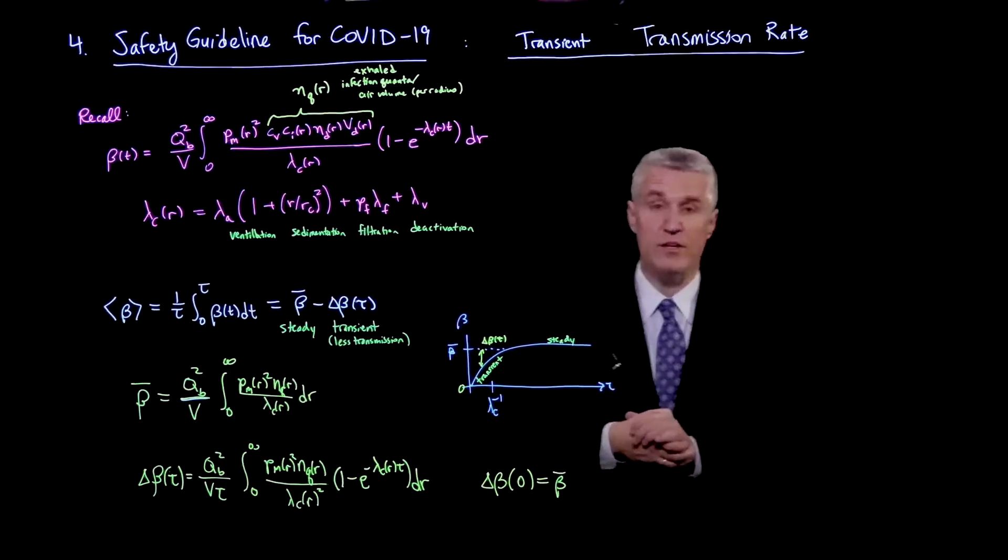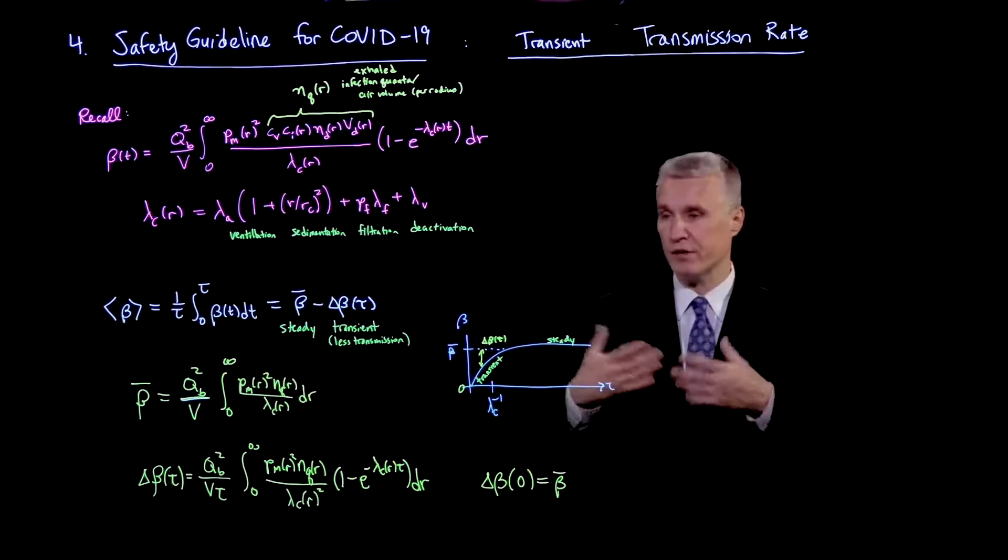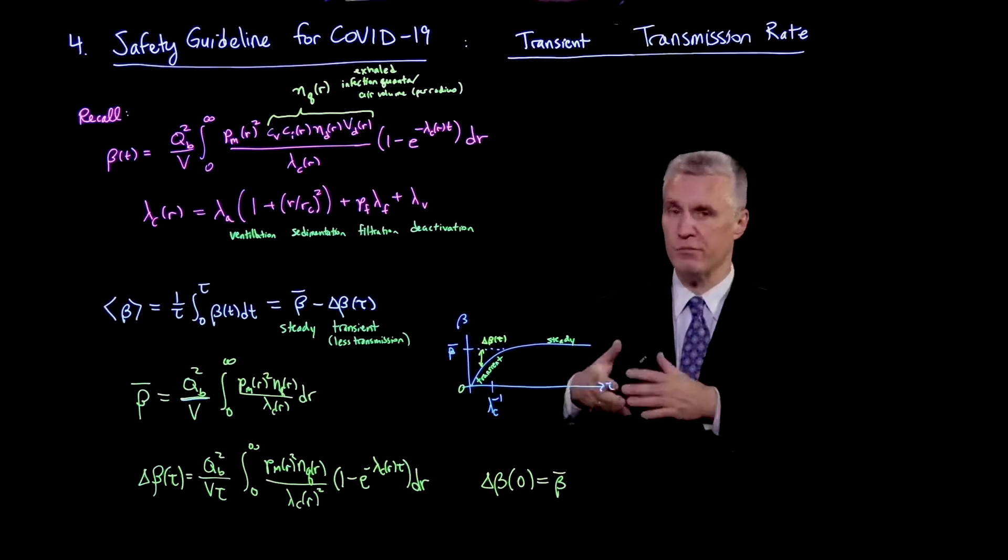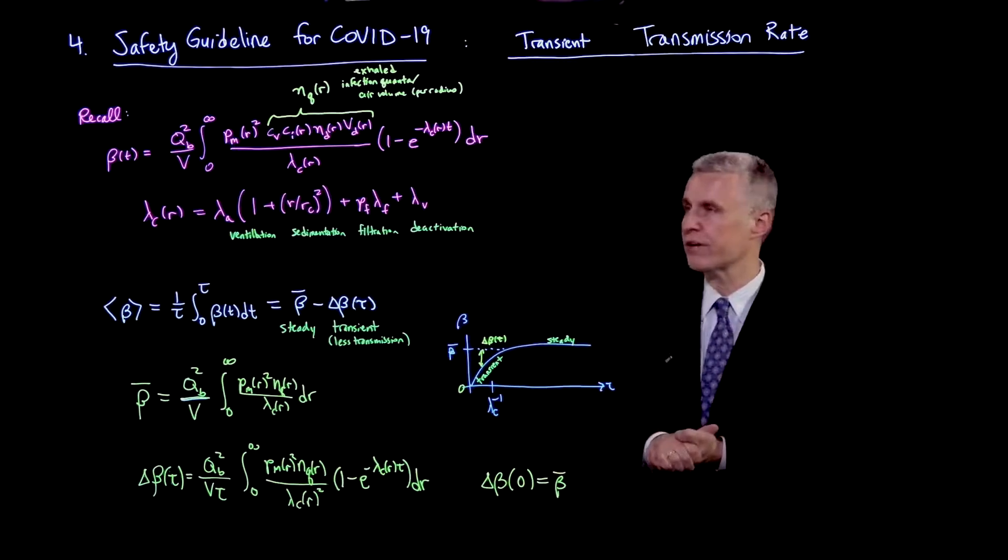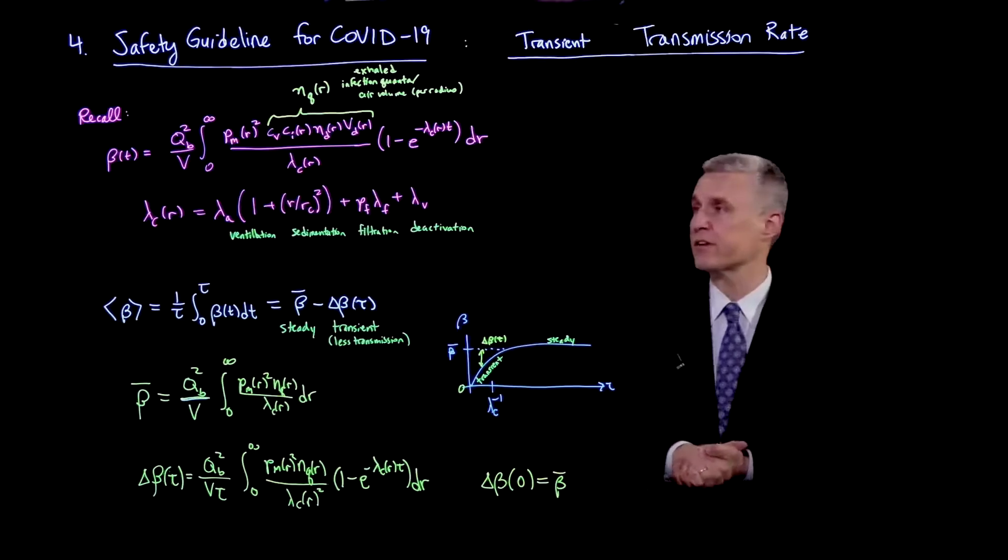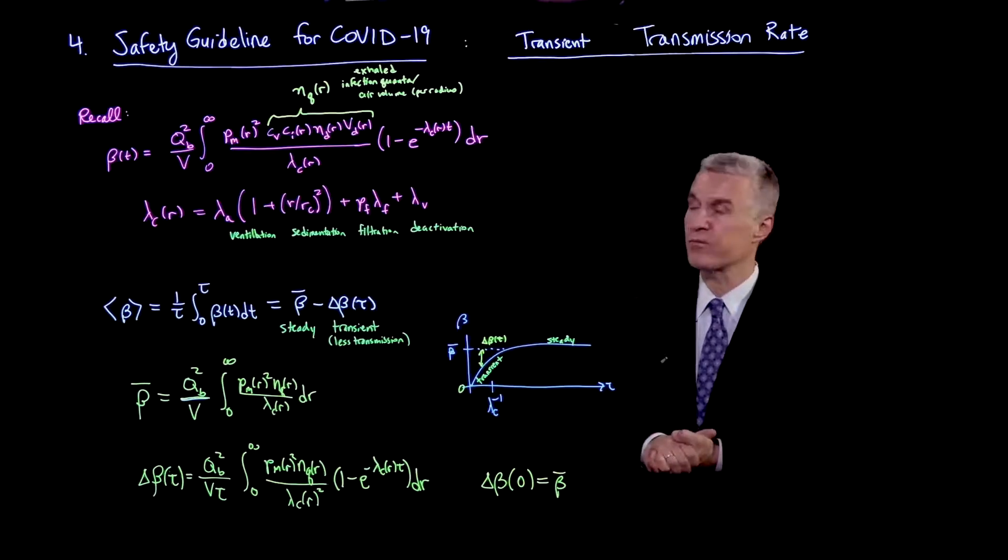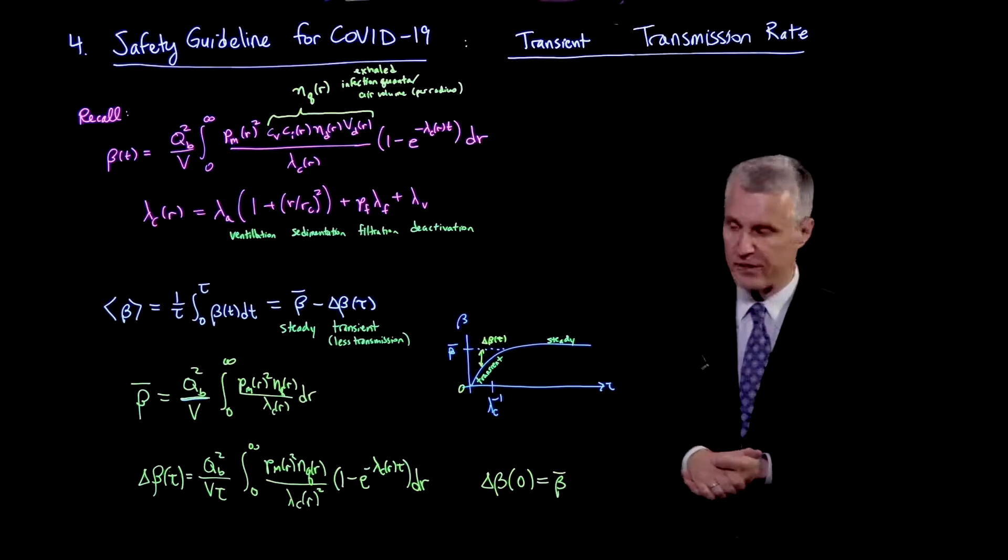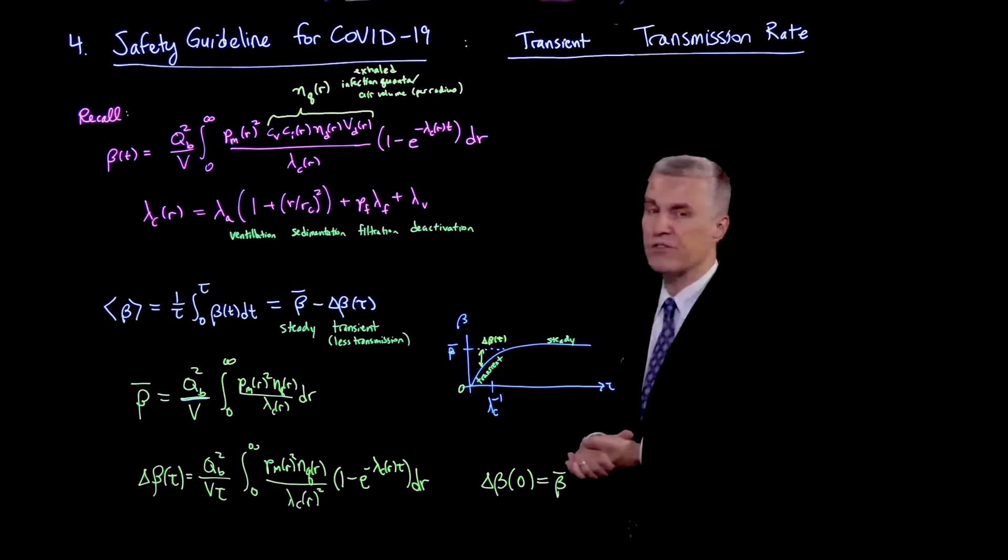Cv is the viral load, which we are typically assuming is near the maximum when we're concerned about controlling spreading. And Ci is the infectivity per virion, which we have discussed before also may have a size dependence and is most likely higher in the aerosol droplets. So that's the general solution.